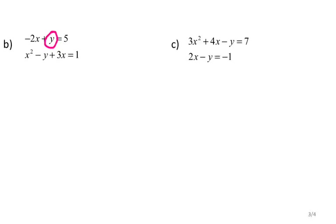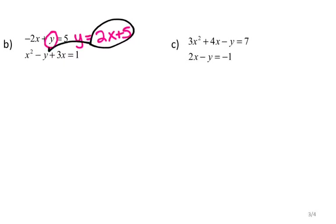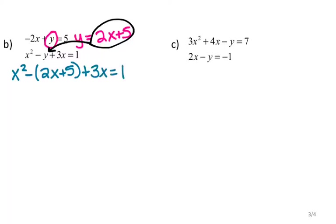Solving for y — I'll add 2x to both sides — gives me y equals 2x plus 5. Now that I know y is 2x plus 5, I can substitute it into my other equation. That leaves me with x squared minus y, where y is 2x plus 5, plus 3x equals 1.